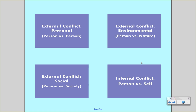These are the four types of conflict: personal, environmental, social, and internal. Understanding their definitions will help you analyze conflict in literature and understand stories more clearly. Still not clear on the definitions? Let's try to apply them.